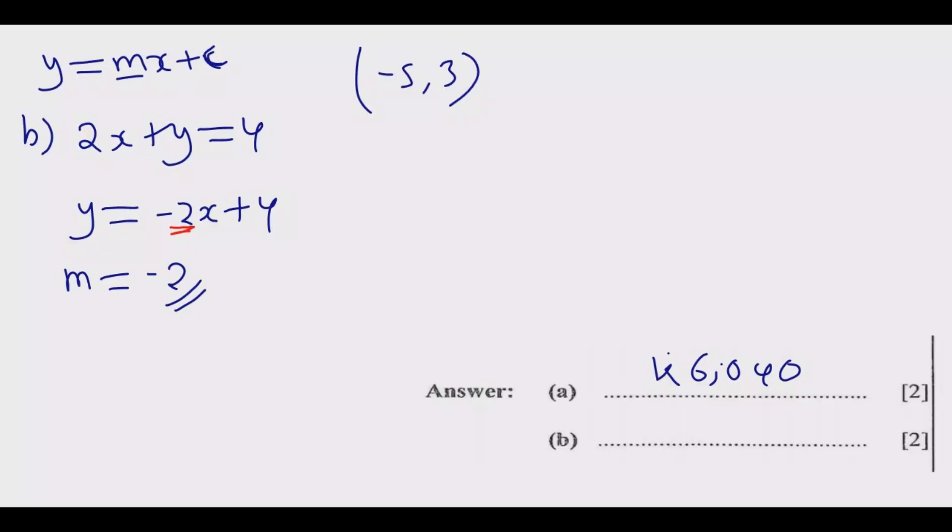Now we know what the gradient is, so finding the equation becomes easier. We use the formula y = mx + c. We know this is x and this is y. Substituting there, we find what the value of c is. Y is 3, M is -2, and x is -5, then plus c.